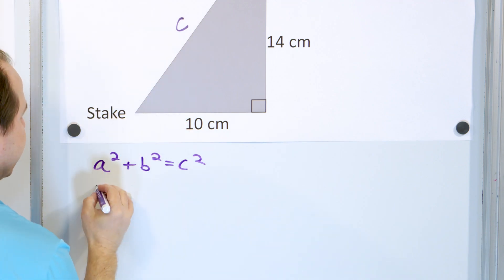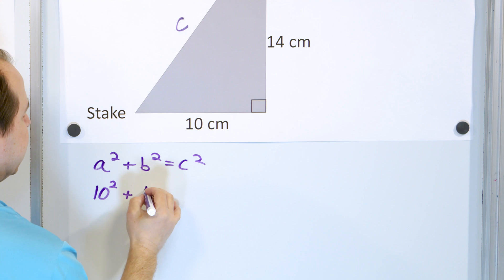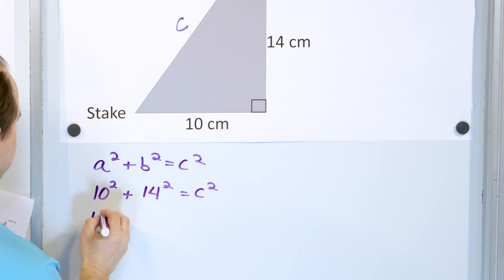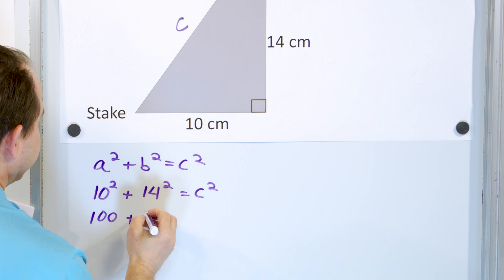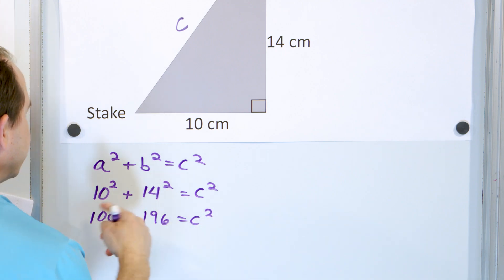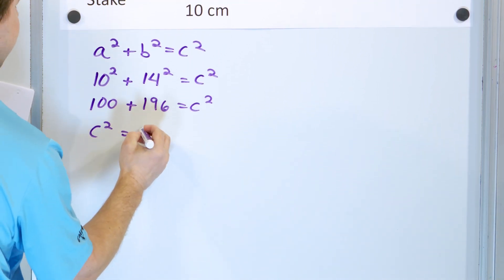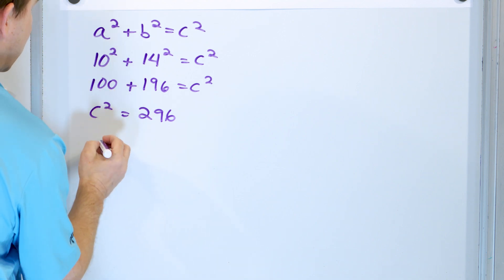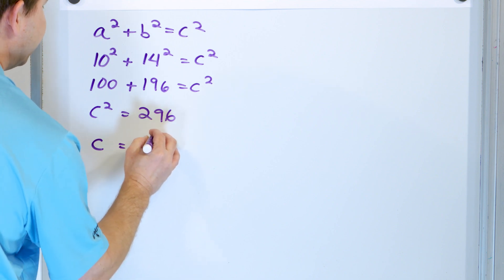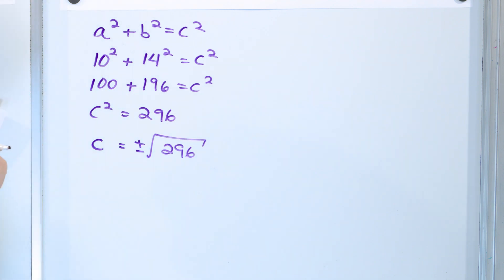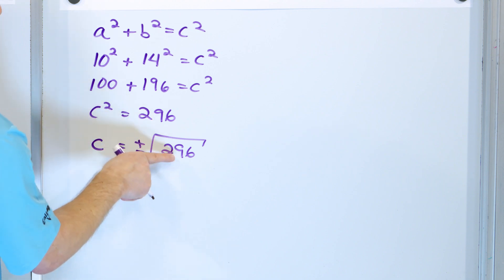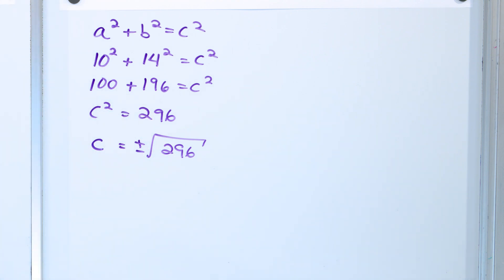We have this tree 14 centimeters tall, and we're staking the rope into the ground 10 centimeters away. The rope is the longest side, the hypotenuse — we label it c because it's opposite the 90-degree angle. It doesn't matter which side is a and b, so I'll put 10 squared for a and 14 squared for b, equal to c². Taking the square root of both sides, and inserting plus or minus since we applied our own radical.